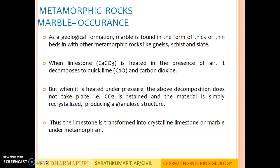Occurrence of marble: As a geological formation, marble is found in the form of thick or thin beds in which other metamorphic rocks like gneiss, schist and slate occur. When limestone is heated in the presence of air, it decomposes to quicklime and carbon dioxide. But when it is heated under pressure, decomposition does not take place — that is, CO2 is retained and the material is simply recrystallized, producing a granular structure. Thus, limestone is transformed into crystalline limestone or marble under metamorphism.